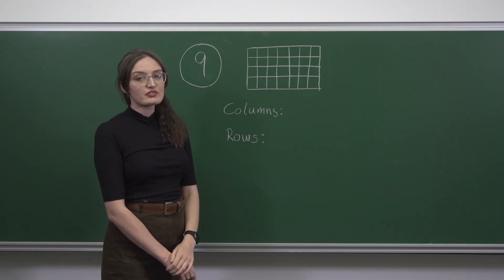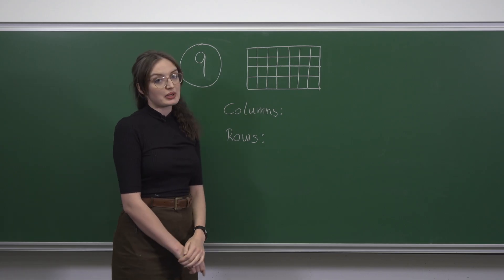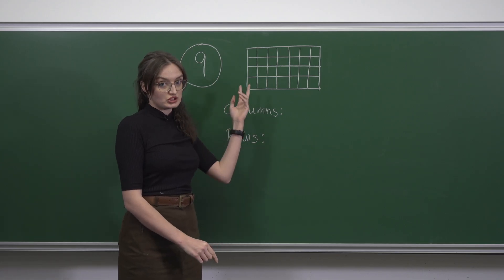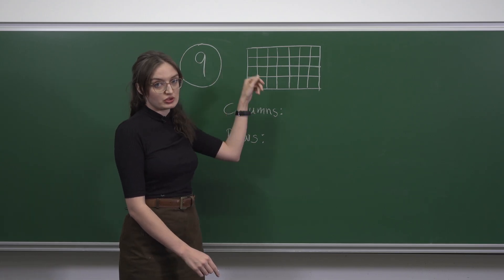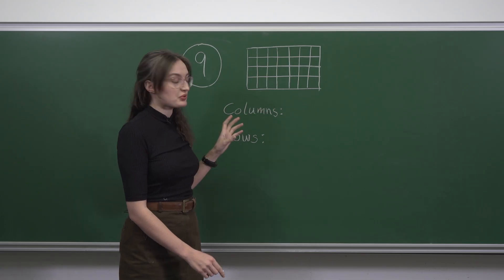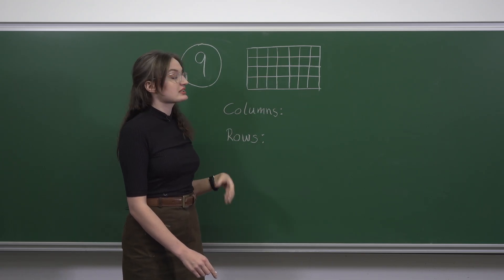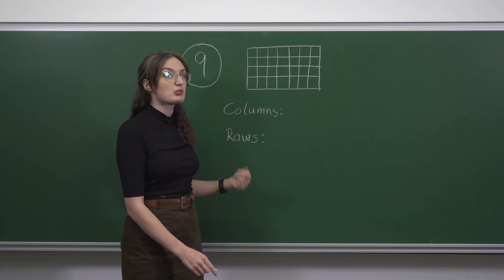In this question we're trying to find out how many ways we can pick two columns which don't touch and two rows which don't touch. We're going to start with the columns and find out how many ways we can choose them.